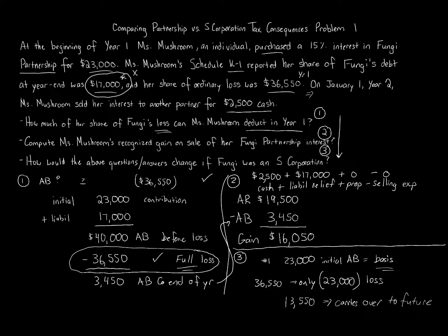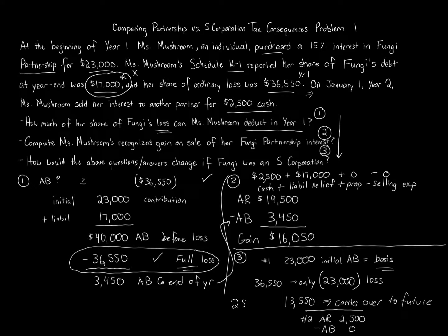Because it'd be $2,500 cash received, minus there'd be no liability relief for property or selling expense, minus the adjusted basis. So now, when you redo the calculation in number two, amount realized, there's no liability relief to worry about here because we don't do liabilities for S-Corps. Amount realized is $2,500, minus the adjusted basis, which we determined in number two is zero. What that does then is we have a $2,500 gain.